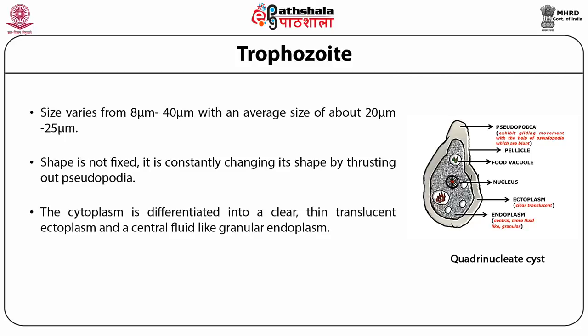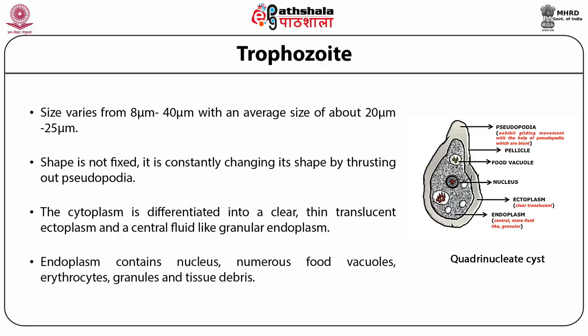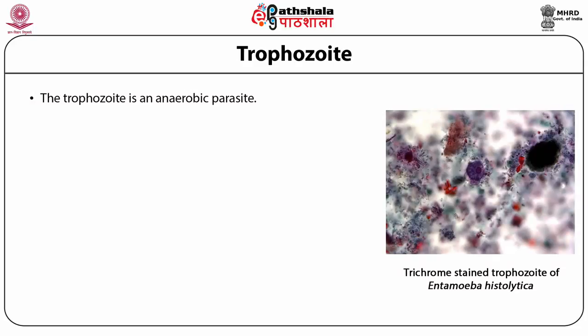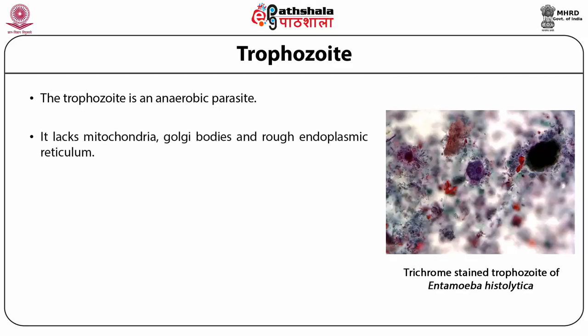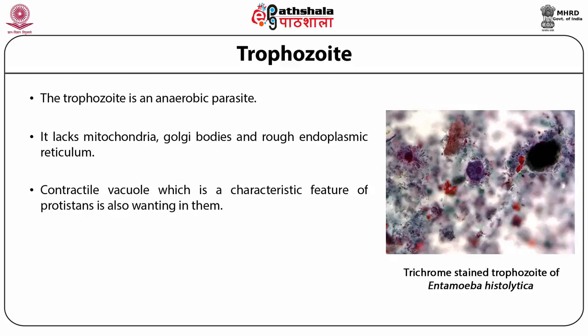The cytoplasm is differentiated into a clear outer ectoplasm, which is thin and translucent, and a central fluid-filled granular endoplasm. The endoplasm contains organelles like nuclei, food vacuoles, erythrocytes, granules, and tissue debris. The trophozoite is an anaerobic parasite and lacks mitochondria, Golgi bodies, and rough endoplasmic reticulum. The contractile vacuole, characteristic of protists, is also absent.